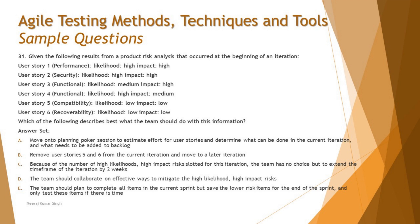Option C says: because of the number of high likelihood, high impact risks slotted for this iteration, the team has no choice but to extend the time frame of the iteration by two weeks. No — you never change the timeline of your sprints. Sprint duration remains constant throughout the release and project. If a sprint is two weeks, it stays two weeks. Only the number of stories varies, not the duration.